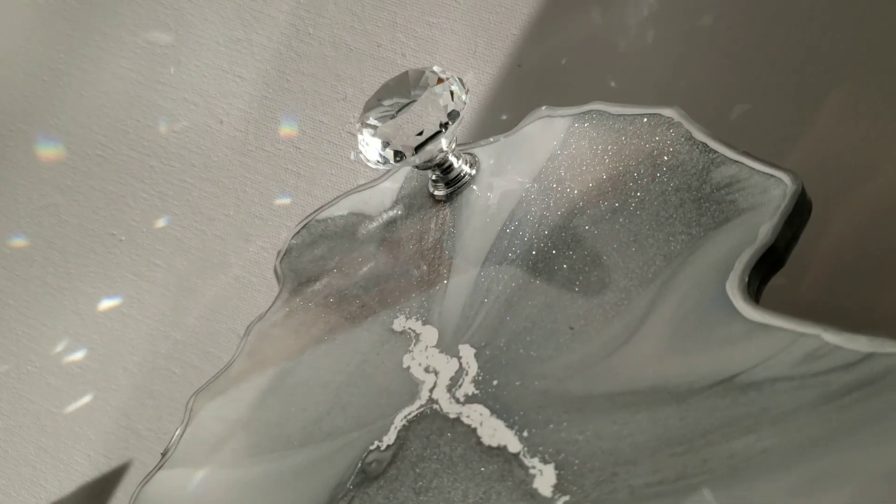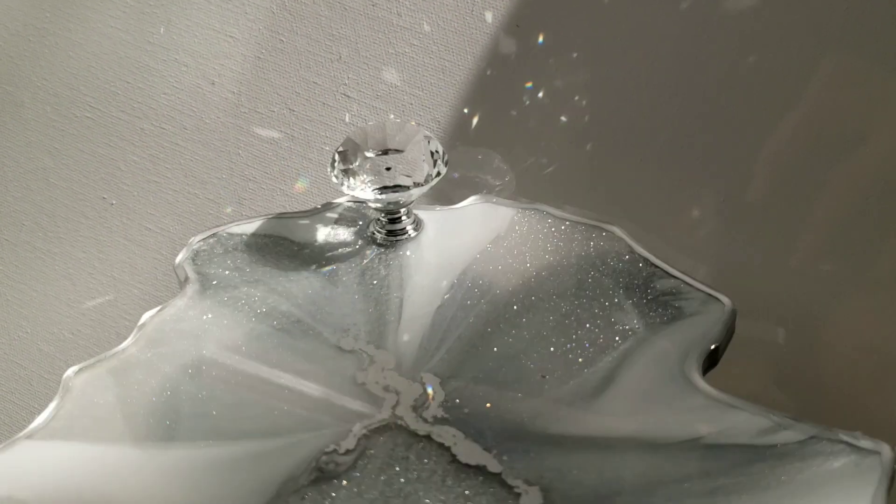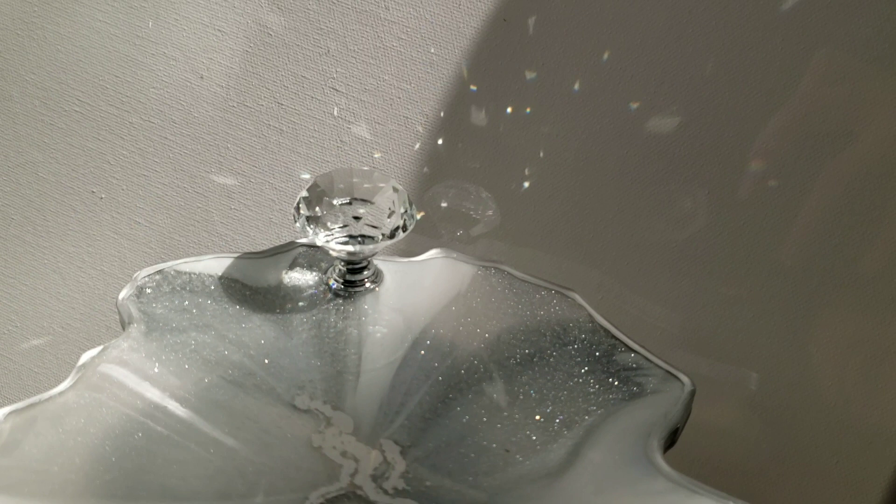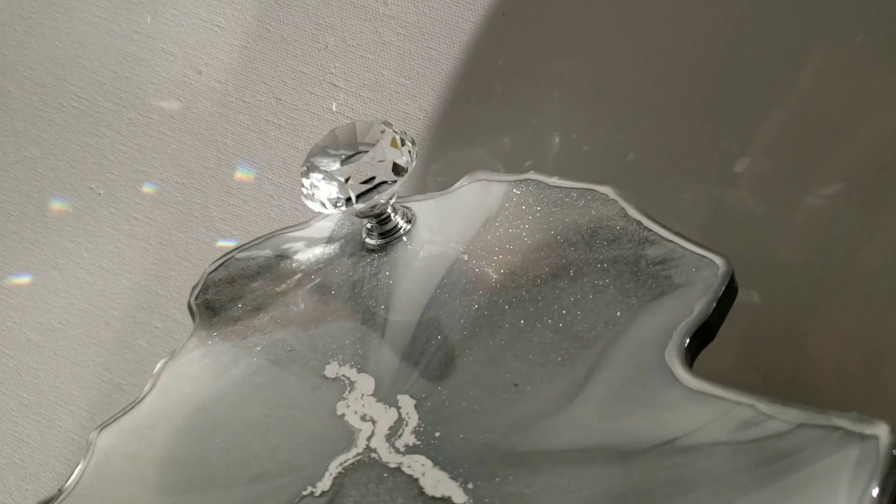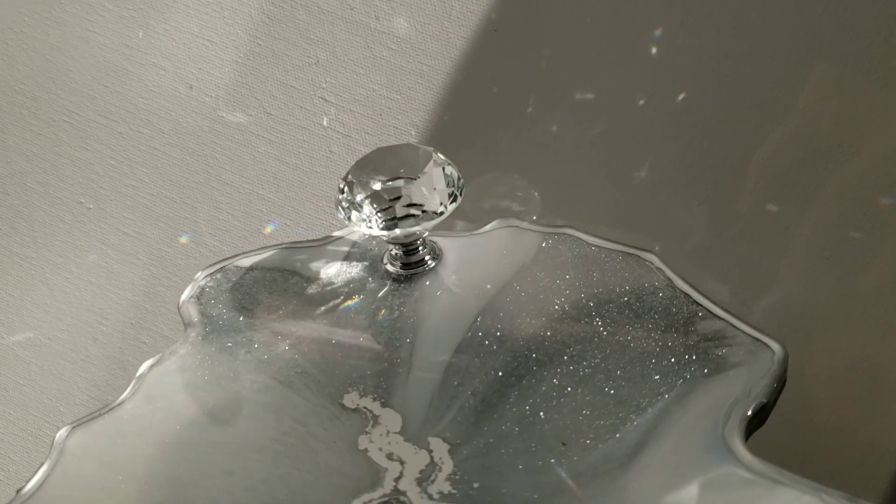Here's a sneak peek of what we're going to be making today. We're going to be making a resin tray and I'm going to be using these gorgeous diamond knobs from Inkyway. Towards the end of the video I'll show you how I attach those to my trays. So let's jump in and get started.